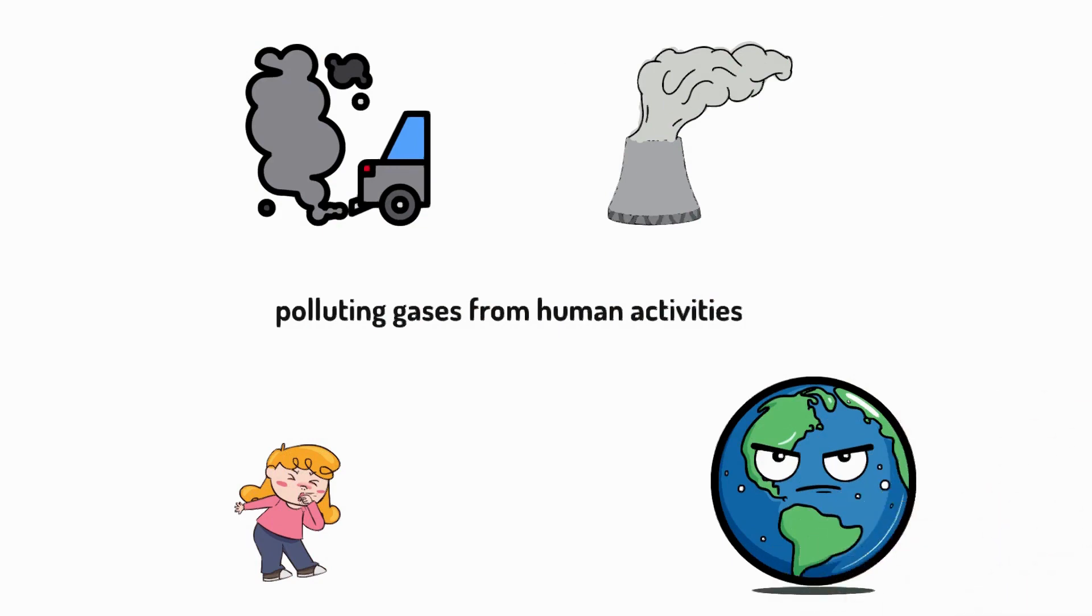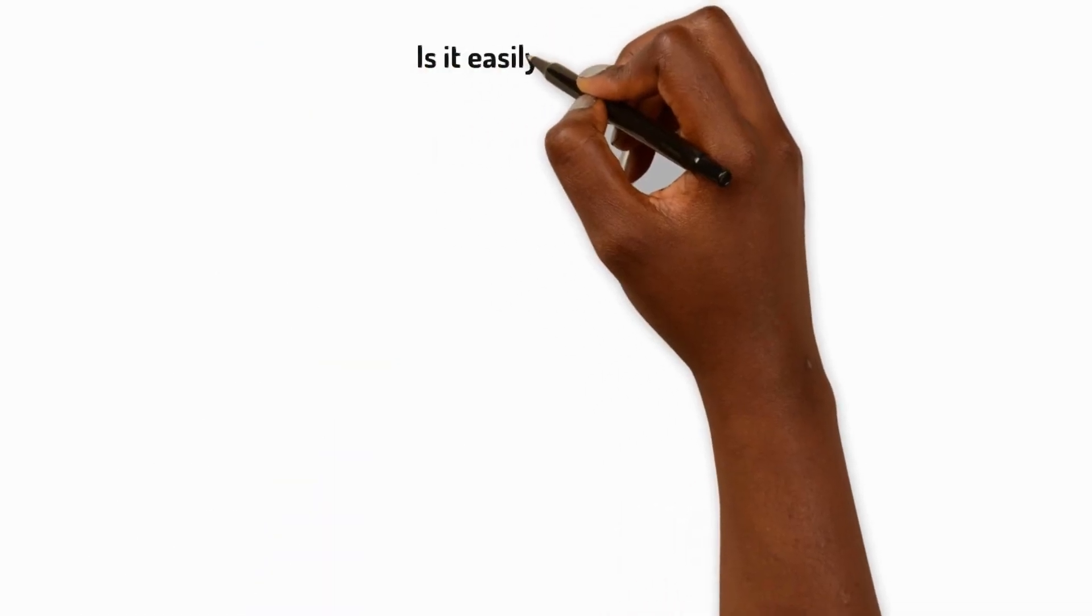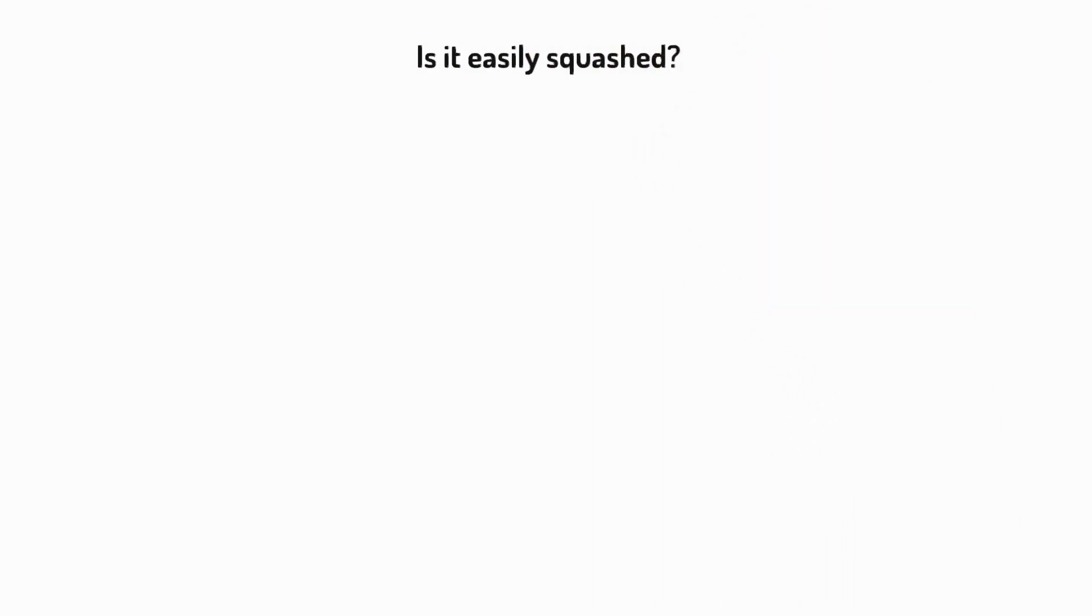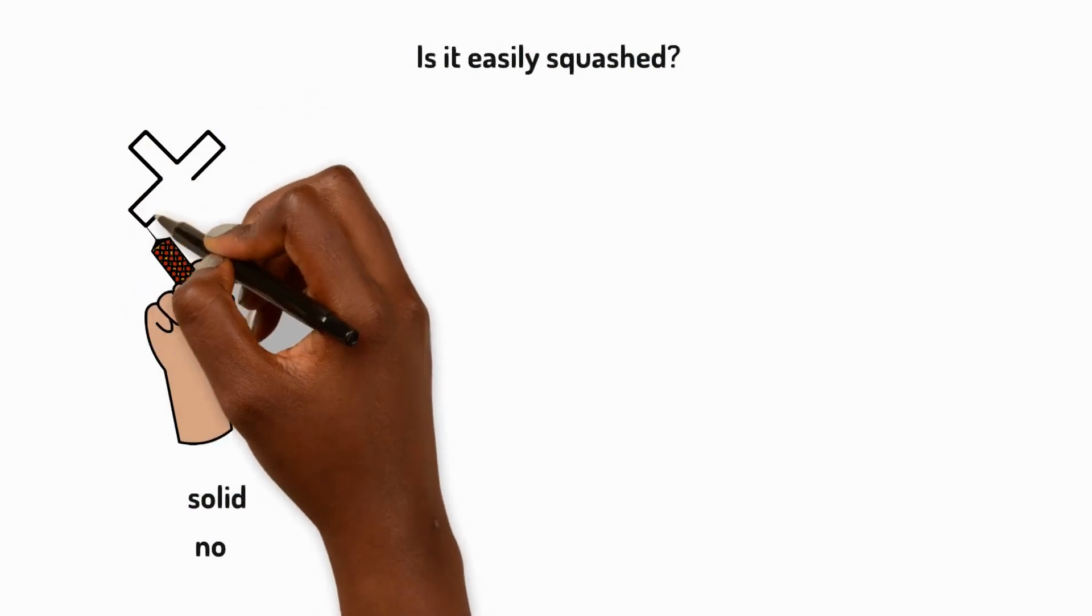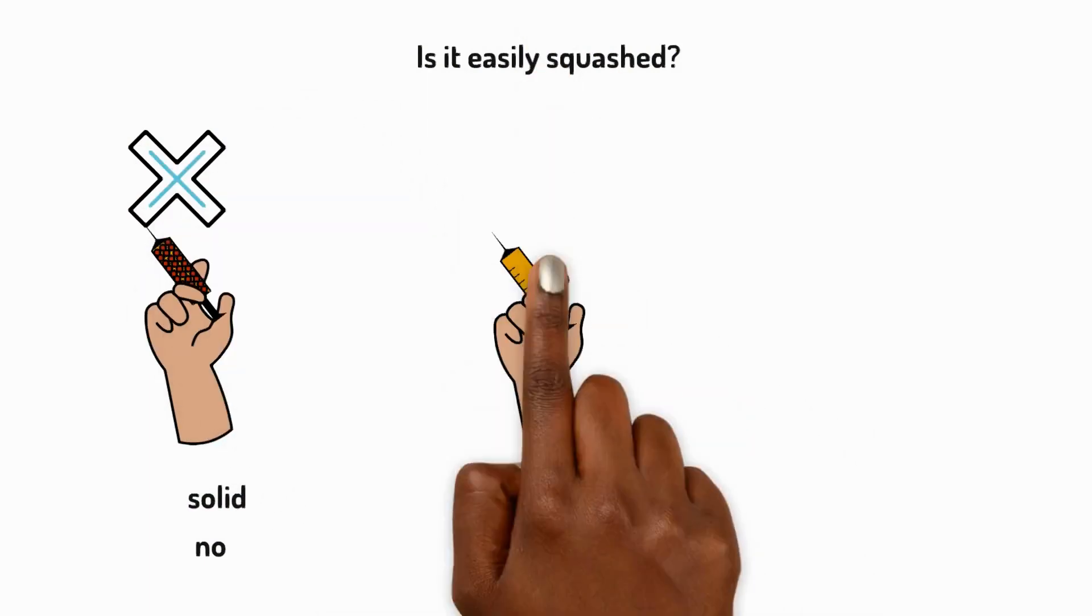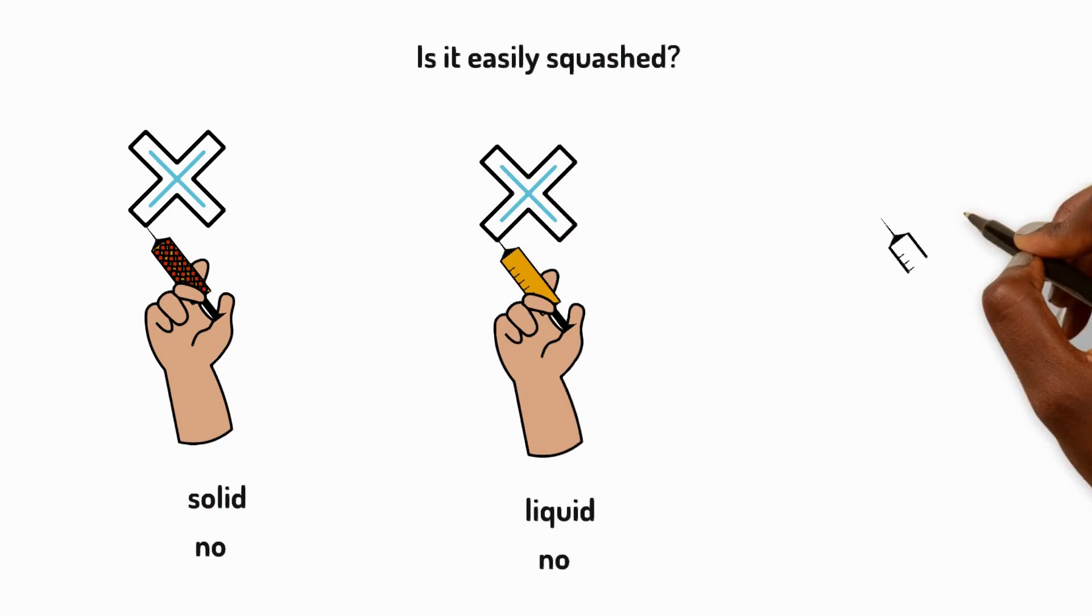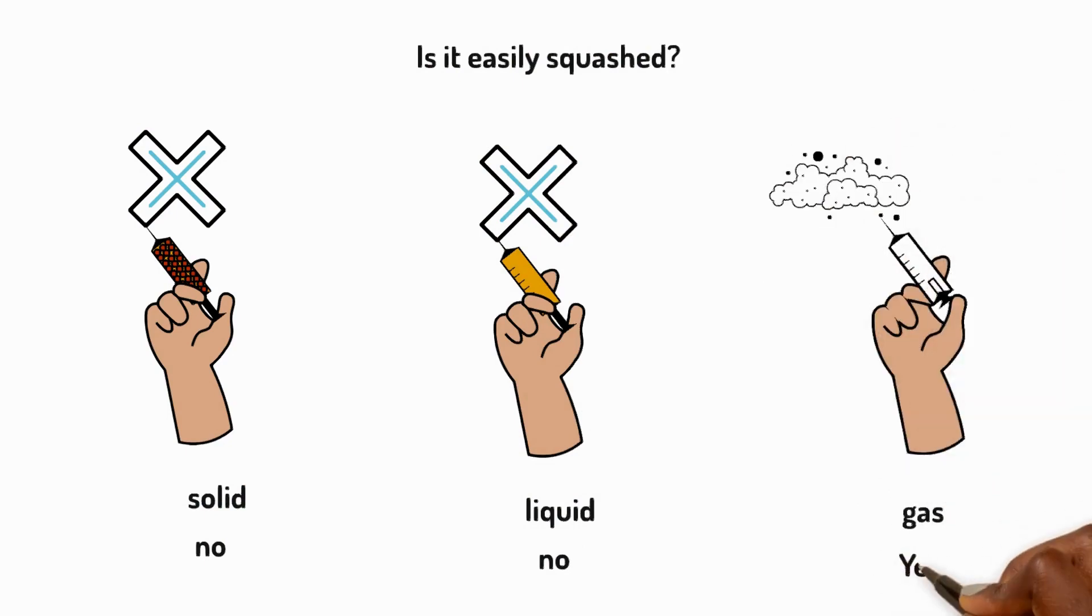Another property of solids, liquids, and gases is whether they can be easily squashed. It's very difficult to squash solids. It's very difficult to squash liquids. But it's easy to squash gases.